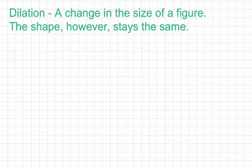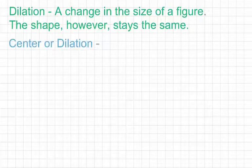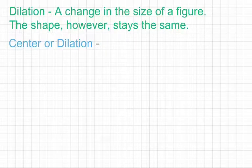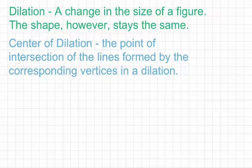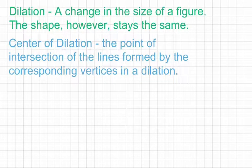For example, a toy or a model car that is supposed to represent an actual car is a dilation of the original car. You take the image of the original car, shrink it way down, and you have the image of the model car. Our next term is Center of Dilation, defined as the point of intersection of the lines formed by the corresponding vertices in a dilation. We'll see what that means as we go through some examples.